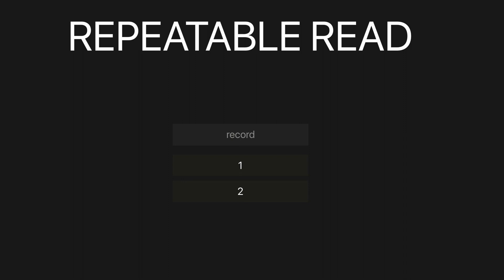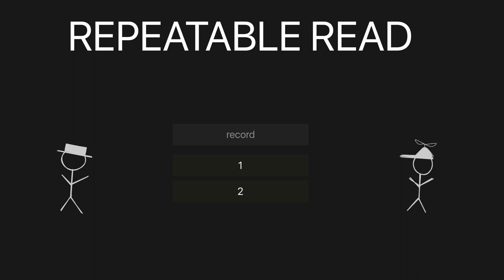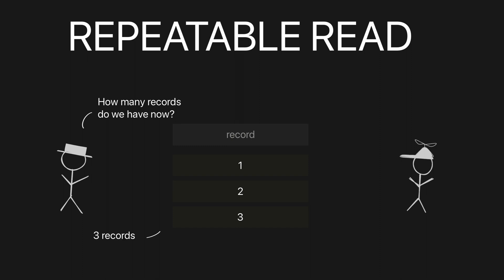Imagine our database has two records — let's call them one and two. User one starts their session and asks the database: how many records do we have? The database replies: two records. Now user two kicks off their session and asks the same thing — the database again says two records. Then user one tells the database to add record three. The database adds it, and user one asks: how many records do we have now? The database answers three records. Makes sense, because user one just added a new record.